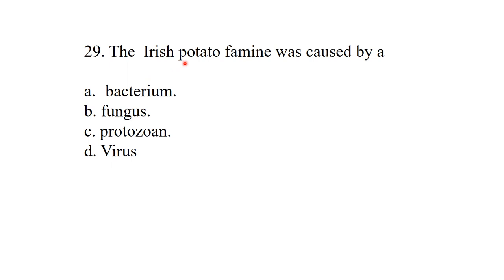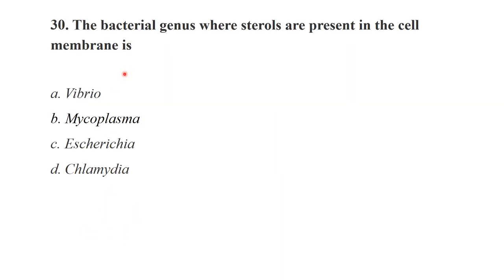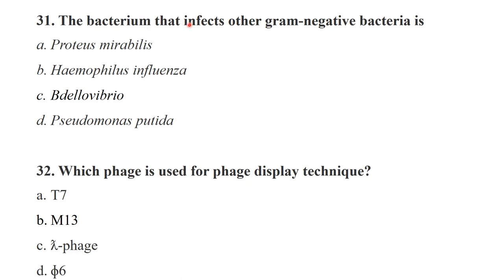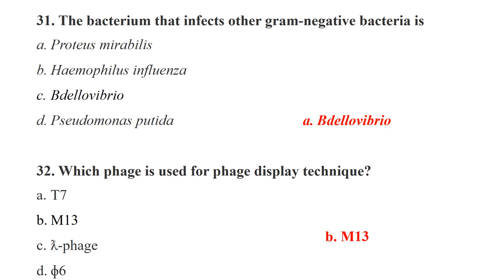The Irish potato famine was caused by a fungus. The bacterial genus where steroids are present in the cell membrane is Mycoplasma — Mycoplasma has no cell wall, so its membrane has steroids. The bacterium that infects other gram-negative bacteria is Bdellovibrio. The phage used for phage display technique is M13 phage.